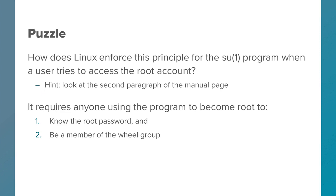If you go to the manual page and look, you'll see you first have to know the root password. But the second thing is you have to be in the wheel group — that's the group with GID zero. Simply knowing the password is not enough; you also have to be in that group. That's an example of separation of privilege because two constraints must be satisfied: first, the password; second, the group membership.